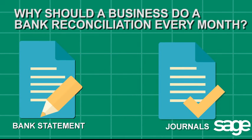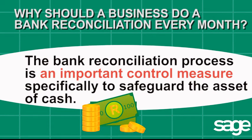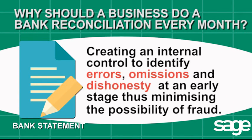Let's return to our original question: why should a business do a bank reconciliation every month? The internal control and auditing processes in a business are implemented to safeguard the business's assets. The bank reconciliation process is an important control measure specifically to safeguard the asset of cash. By comparing our internal records to the external records of a business, we create an internal control to identify errors, omissions and dishonesty at an early stage, thus minimising the possibility of fraud.